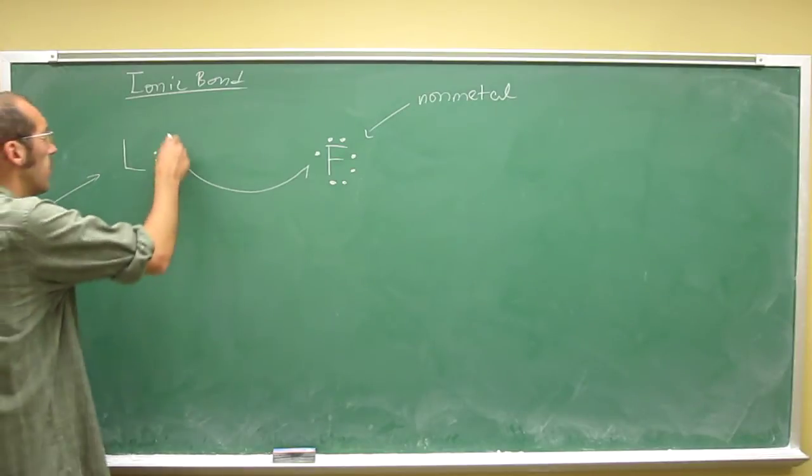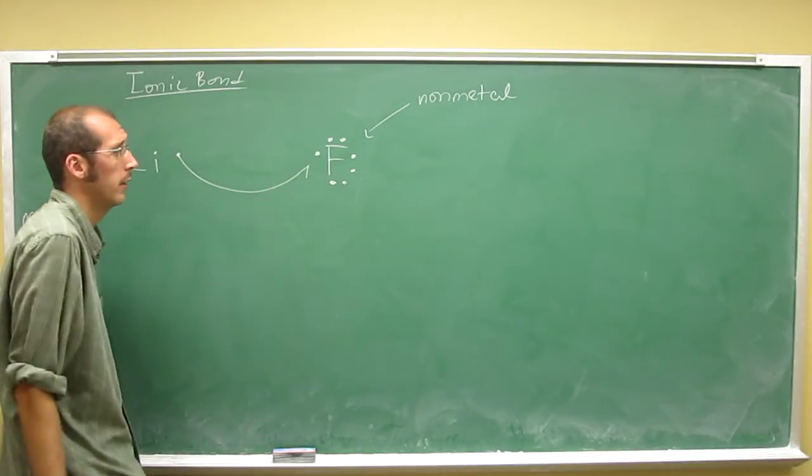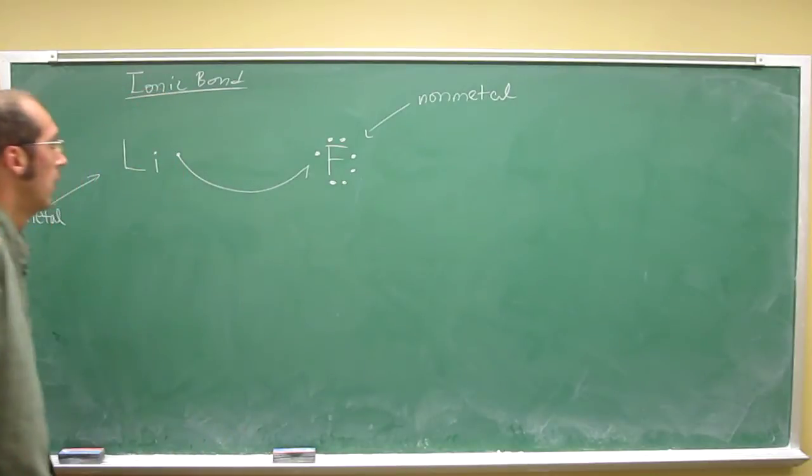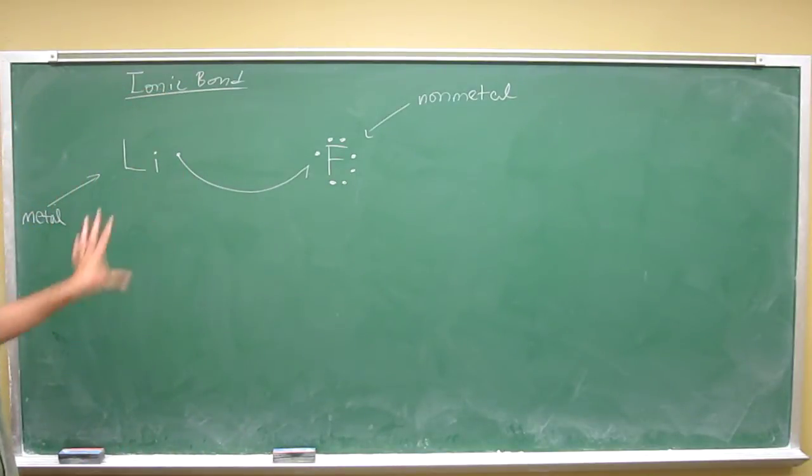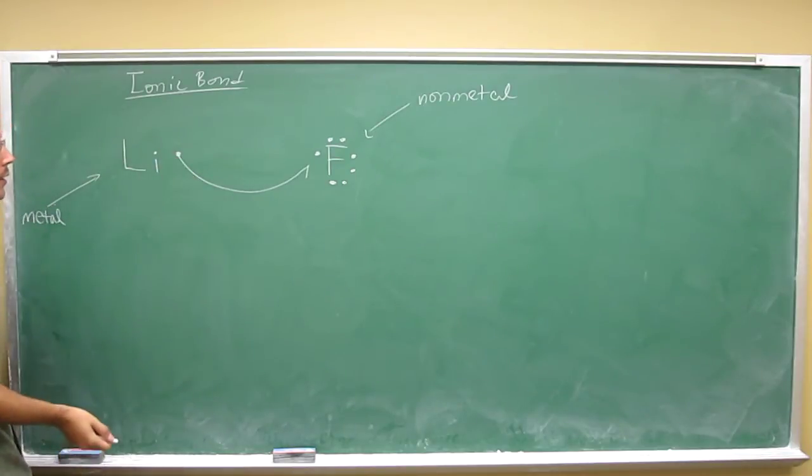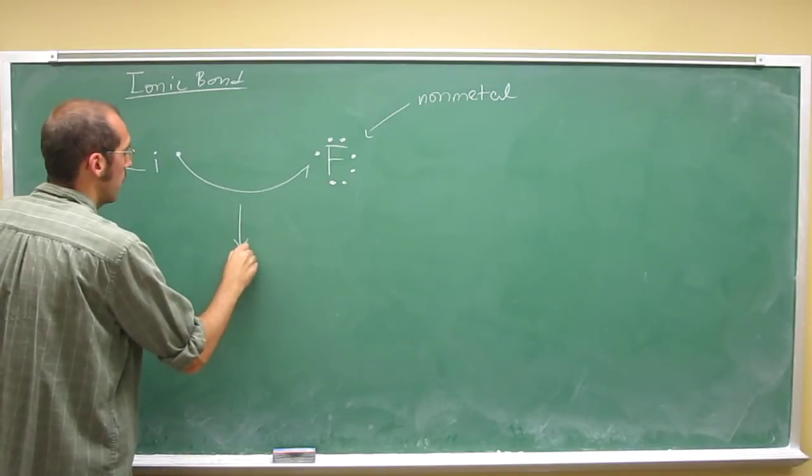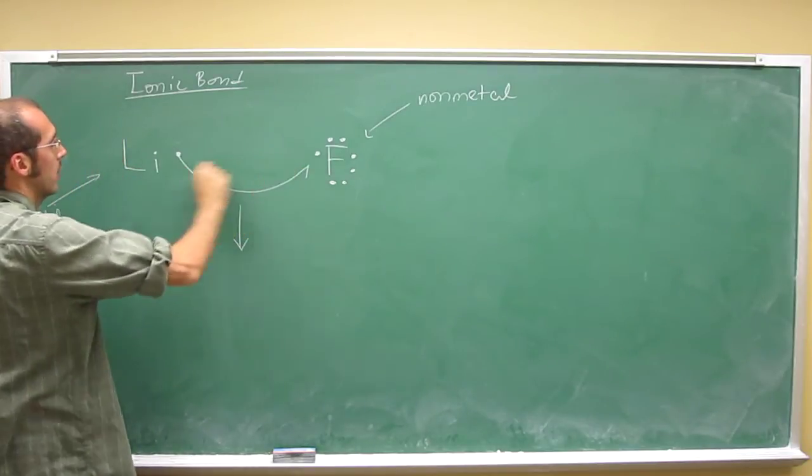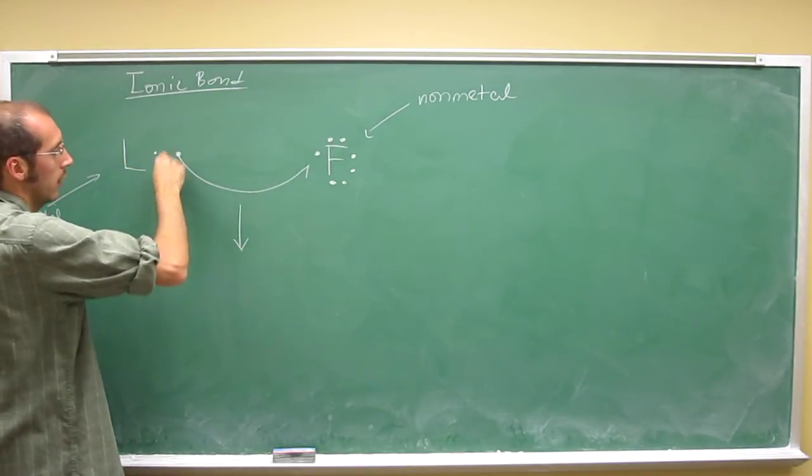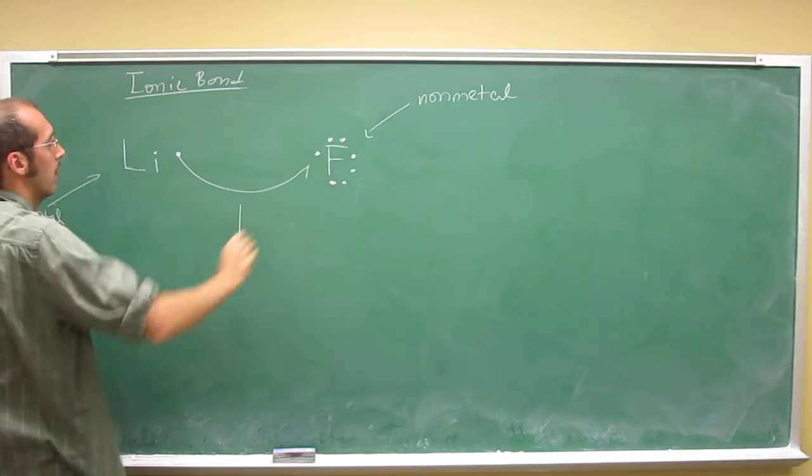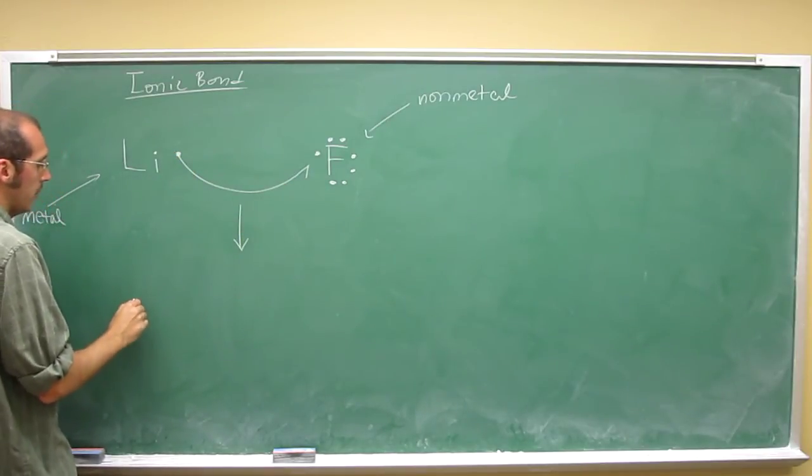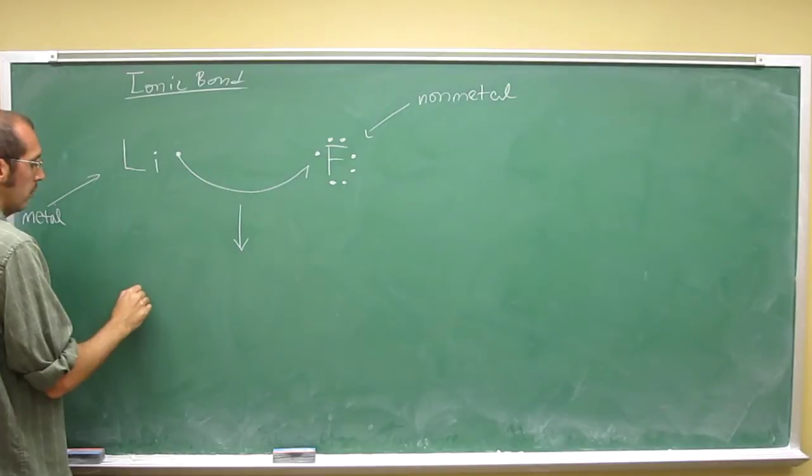When we're going to show the transfer of two electrons, we'll do a double-headed arrow. Go back and look at that last video if you haven't seen that. But anyway, so when we do this, what happens, so this is a reaction, right? We're actually transferring an electron from the lithium atom to the fluorine atom, and we're making two new particles.